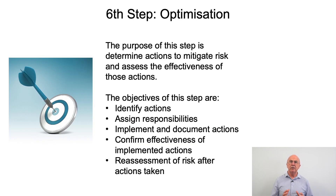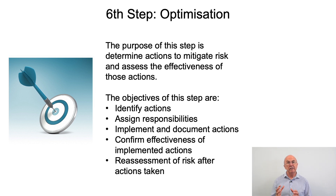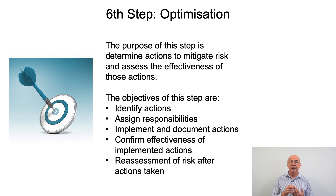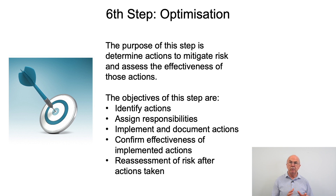Step six: optimization. The purpose of this step is to determine actions to mitigate risk and assess the effectiveness of those actions. In simple terms the objectives are: identify actions, assign responsibilities, implement and document the actions, confirm that the actions have been effectively implemented, and only then go back and reassess the risk after the actions have been taken.